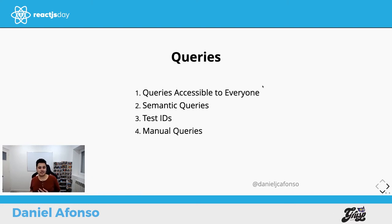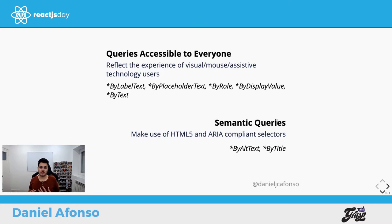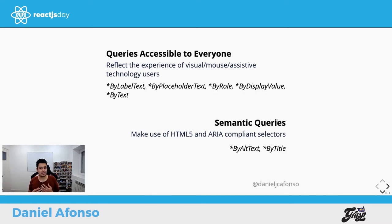Starting with queries accessible to everyone — these reflect the experience of visual, mouse, or assistive technology users. They include: queryByLabelText, queryByPlaceholderText, queryByRole, queryByDisplayValue, and queryByText. If these don't work, try semantic queries, which use HTML5 and ARIA-compliant selectors — byAltText and byTitle. Use these as a second choice, since the user experience with alt text and title varies across browsers and assistive technology.